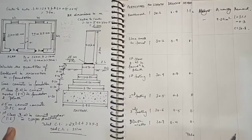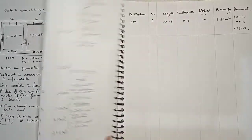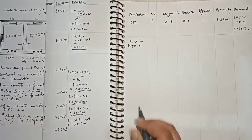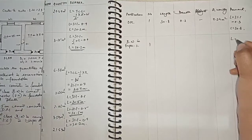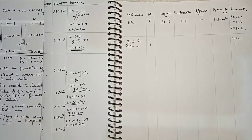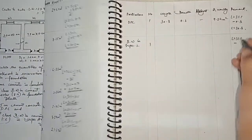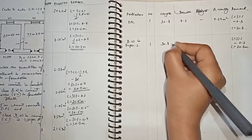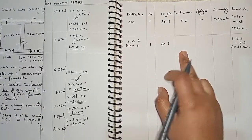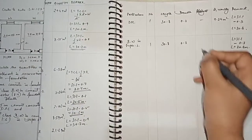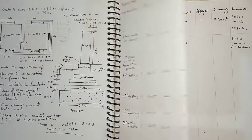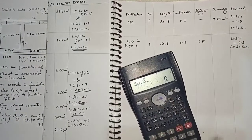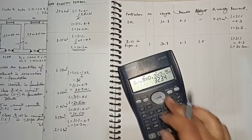For first class brick work in cement mortar in superstructure: length = total center line length minus width of superstructure wall (0.3m) = 30.8 meters. Breadth is 0.3m and height of superstructure is 3.5 meters. Quantity = 30.8 × 0.3 × 3.5 = 32.34 cubic meters.